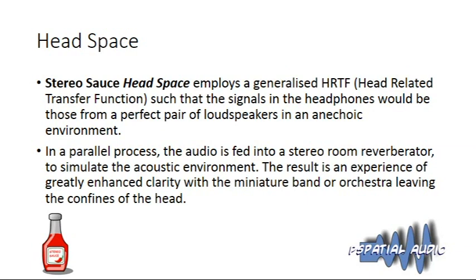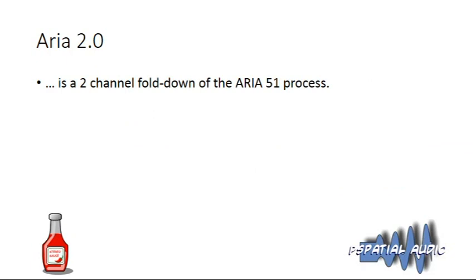Think of the early Beatles records listened to on headphones — those sound really very peculiar. Headspace takes away this effect because you get a much more balanced, blended sound as you do when you listen through loudspeakers. ARIA 2.0 is a two-channel fold-down of the ARIA 5.1 process — somewhat ironic in that we up-convert to 5.1 and fold back to 2.0, but it's a fold-down including the extra information generated via up-conversion, and works well for classical material.